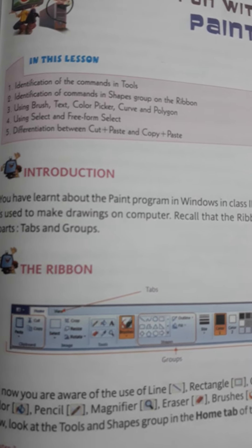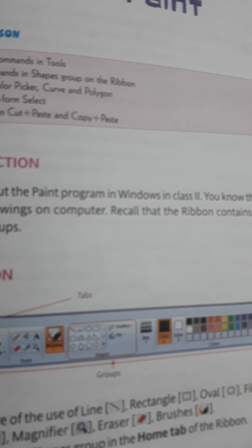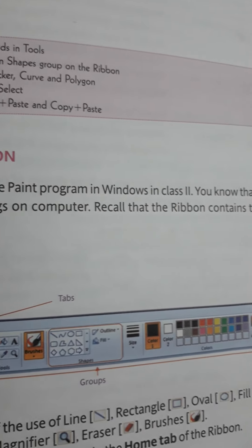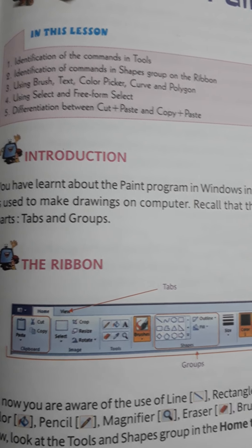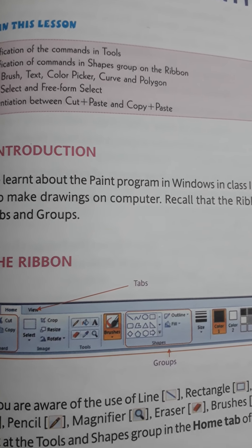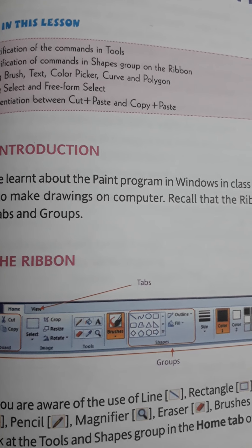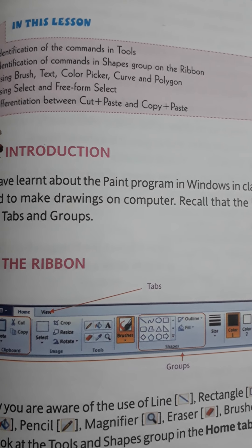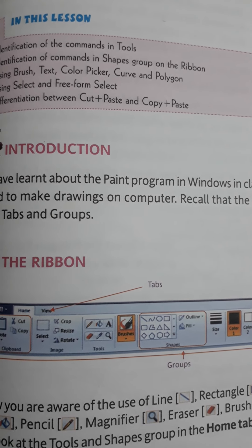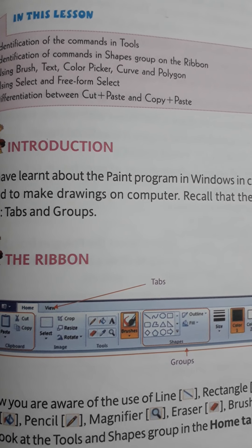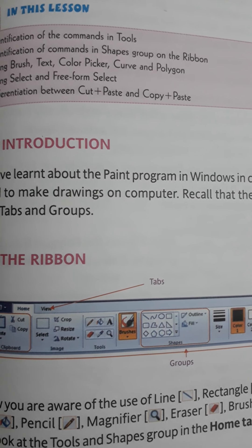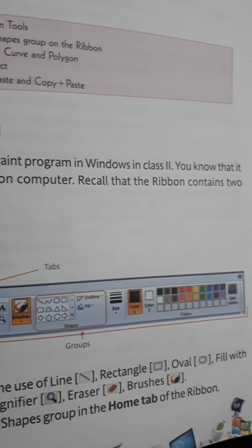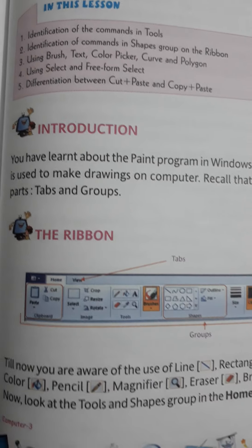You have learned about the Paint program in Windows in Class 2. You know that it is used to make drawings on a computer, and we have done many practical programs in Class 2 in which we have seen how to use different tools, colors, and shapes for making any drawing. Recall that the ribbon contains two parts: tabs and groups.